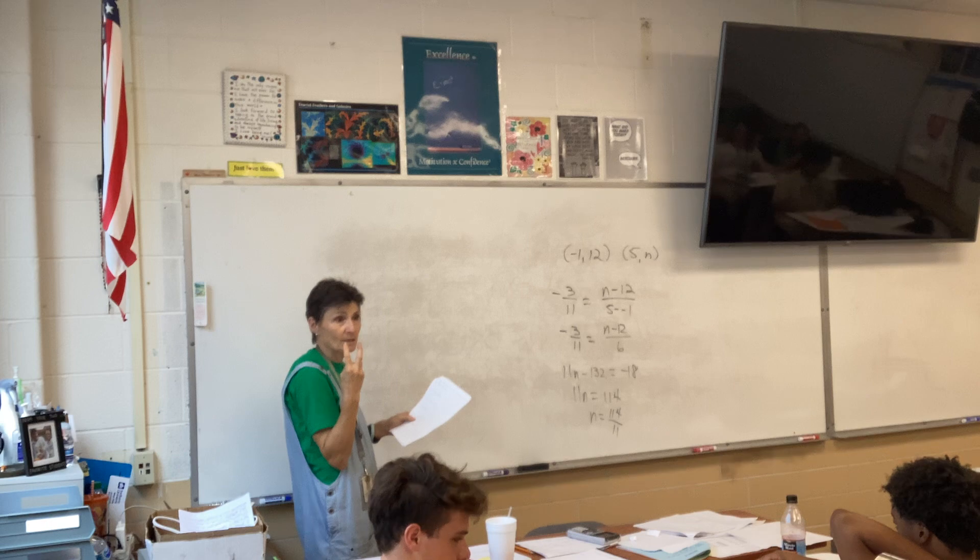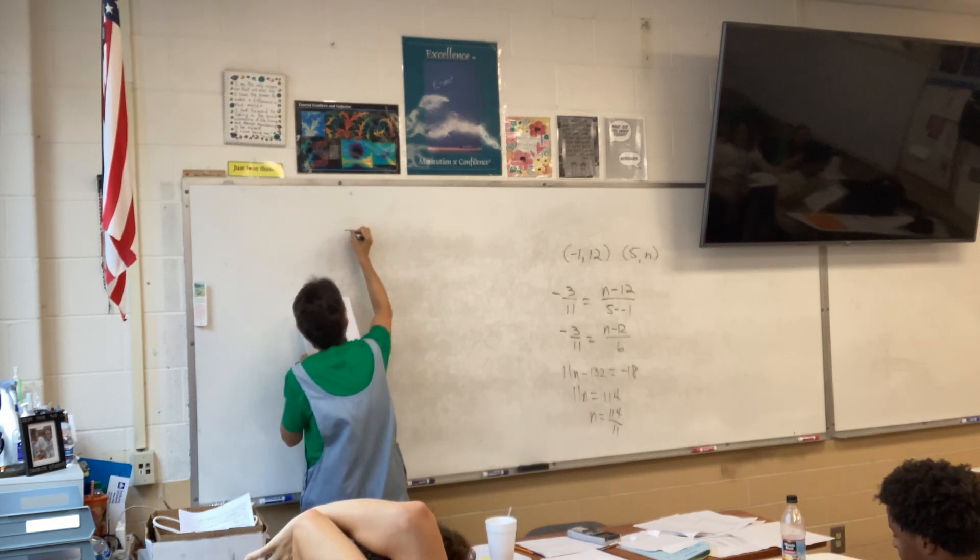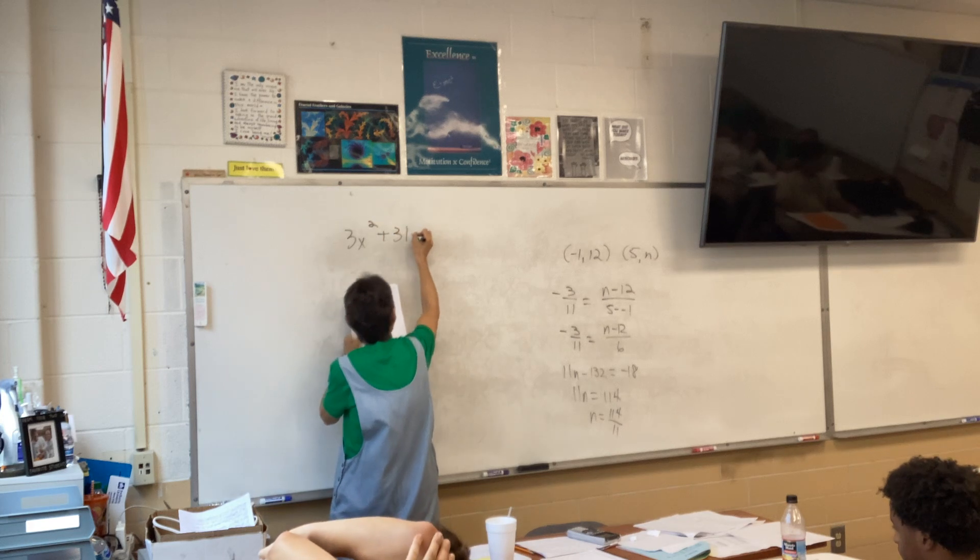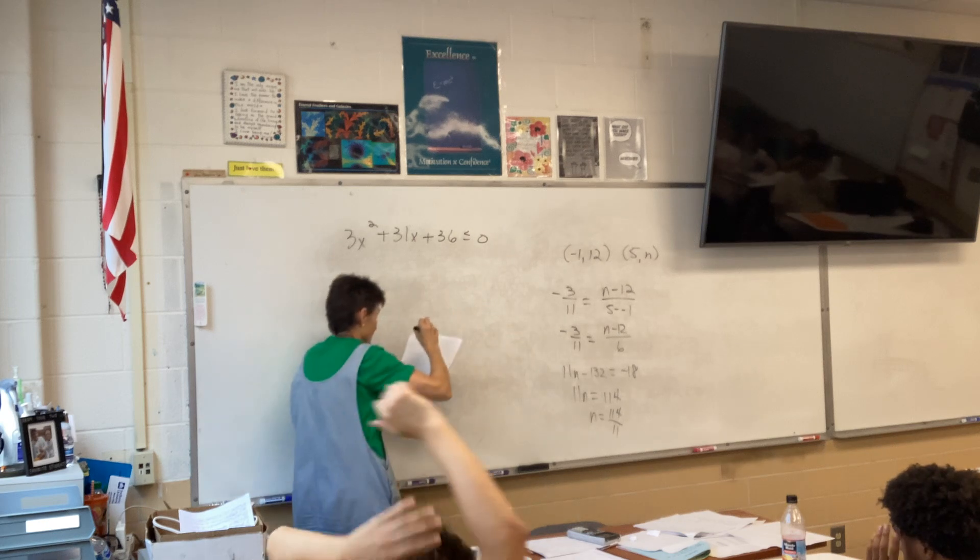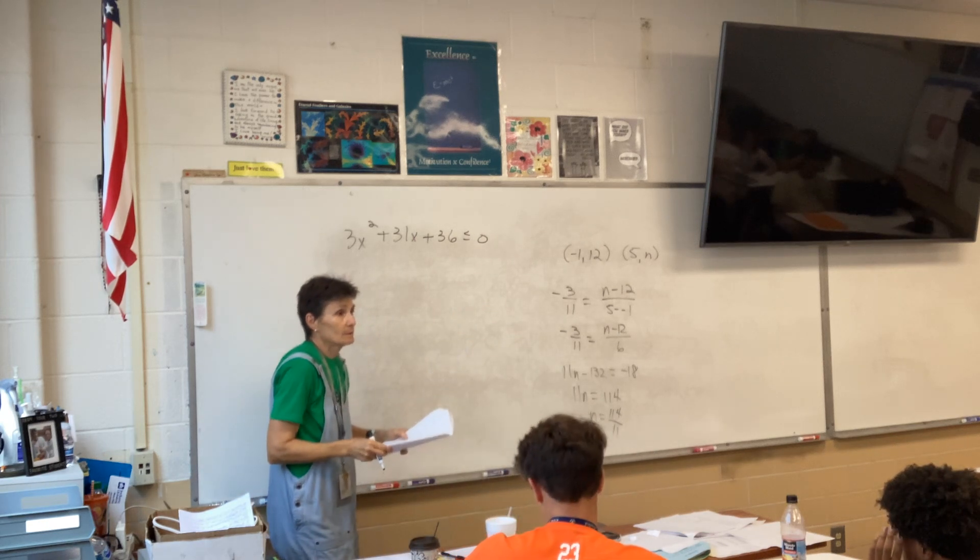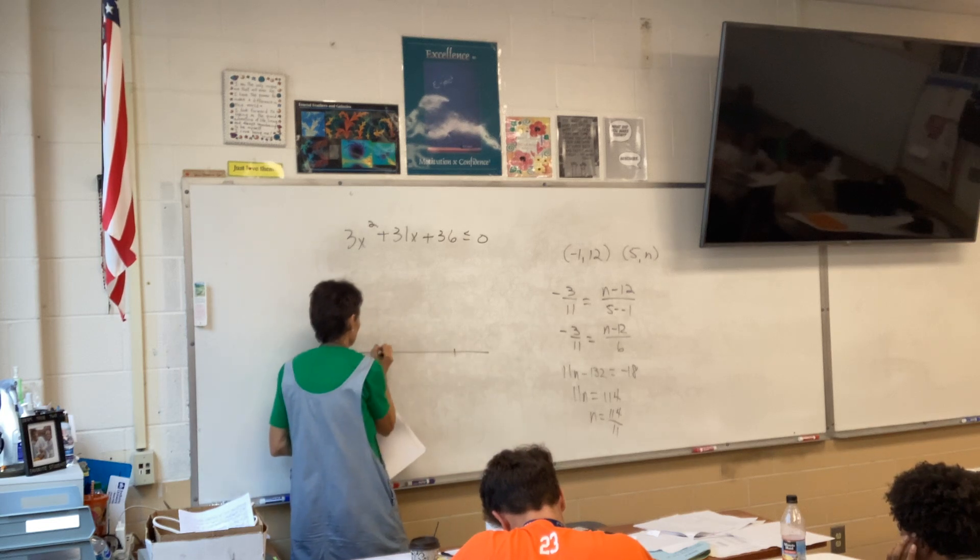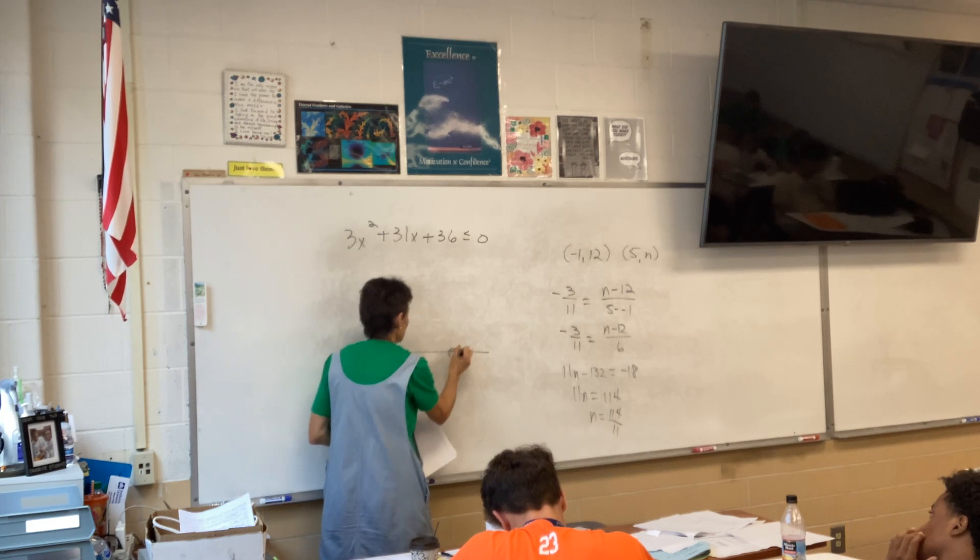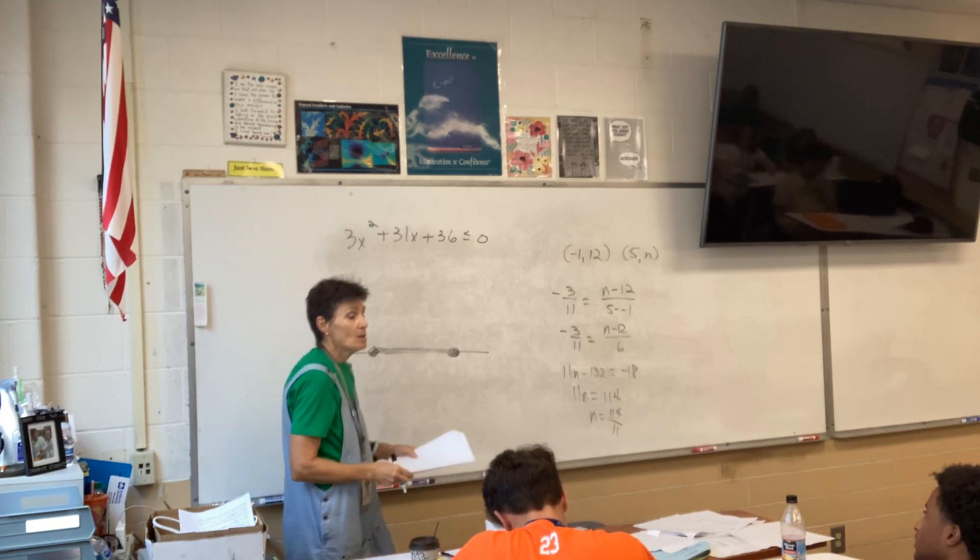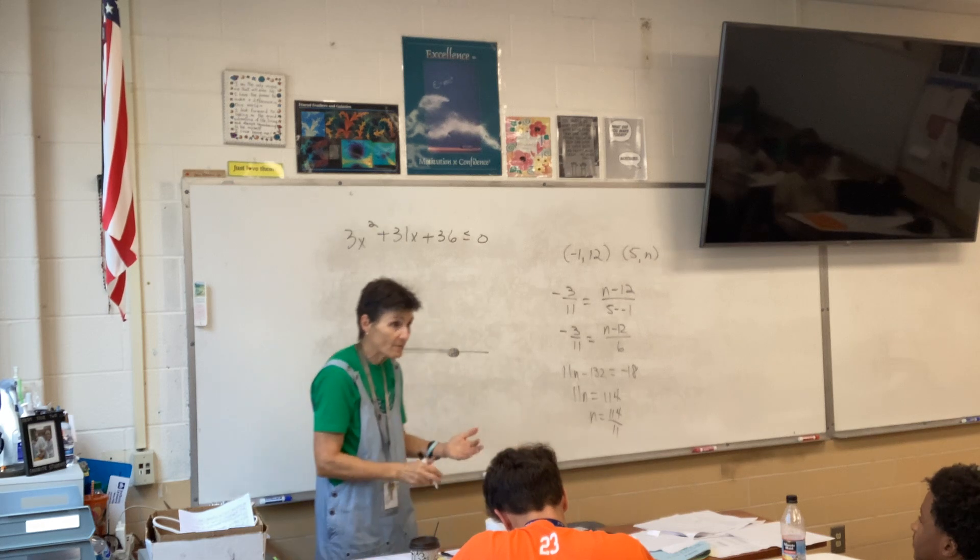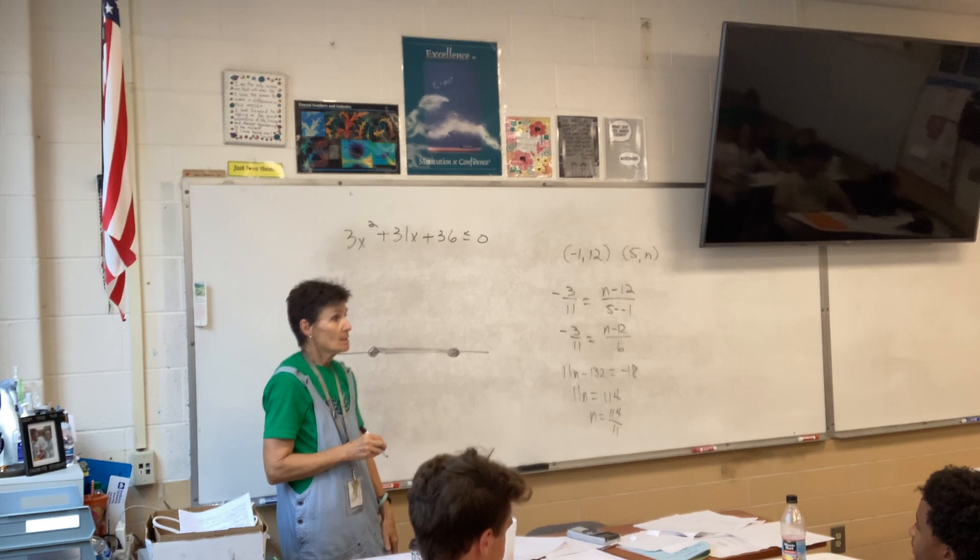And I'm using a number line because it's an inequality. And in an inequality, I always have to shade. Right? So, I know that eventually, there are going to be two dots on my number line. And, since it's a less than, they will be shaded in between.